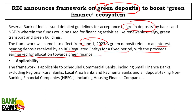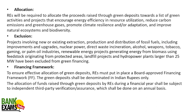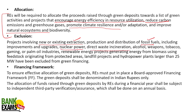All collected money would be allocated towards green projects — such as projects that encourage energy efficiency and resource utilization, reduce carbon emissions and greenhouse gases, promote climate resilience, and improve natural ecosystems and biodiversity. Some activities are excluded: projects involving new or existing extraction, production, or distribution of fossil fuels including upgrades; nuclear power; direct waste; alcohol; weapons; tobacco; gaming; palm oil industry; renewable energy from biomass using feedstock; landfill products; and hydropower projects larger than 25 megawatts.